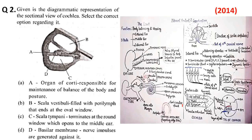D — vascular membrane। Nerve impulse are generated against it। तो vascular membrane पे इस तरह का structure होता है, जैसे यहाँ पे दिख रहा है, यह vascular membrane है, और यहाँ पे nerve impulse generate होते हैं। तो option D भी correct है। तो यहाँ पे जो चारो options दिए हुए हैं वे सभी correct हैं। हो सकता है कि जहाँ से मैंने उठाया है वहाँ से कुछ error आ गया होगा, लेकिन यह चारो चीज़ें सही हैं।